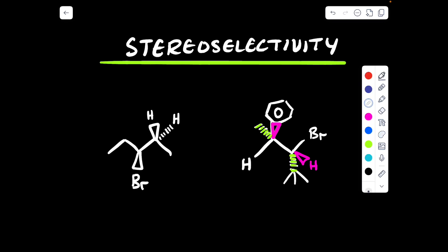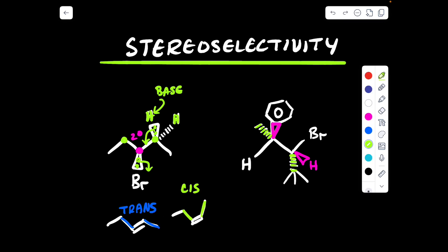Now let's discuss stereoselectivity of E2 reactions. Consider this substrate. Our alpha carbon is secondary and there are two beta carbons where both of those beta carbons have two protons. That means a base could come in and eliminate either of these hydrogens to form either the cis or the trans double bond. The cis product is when both priority groups are on the same side, whereas the trans product is when both priority groups are on opposite sides. So when you have a beta carbon with two hydrogens, you can get both of these products.